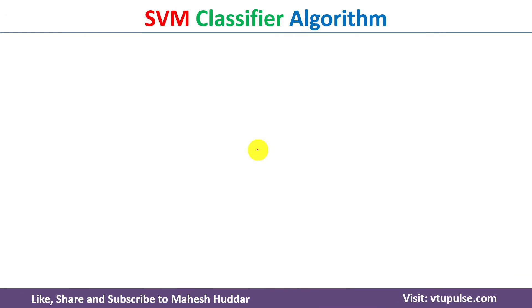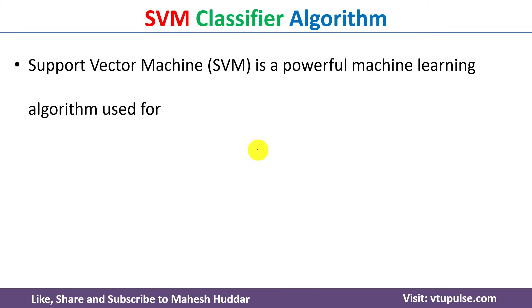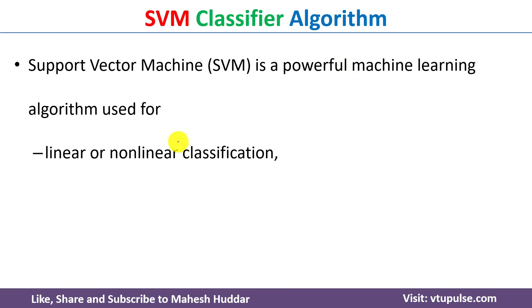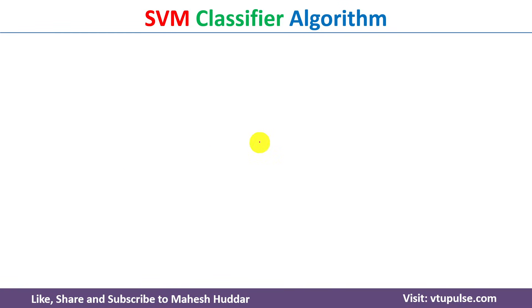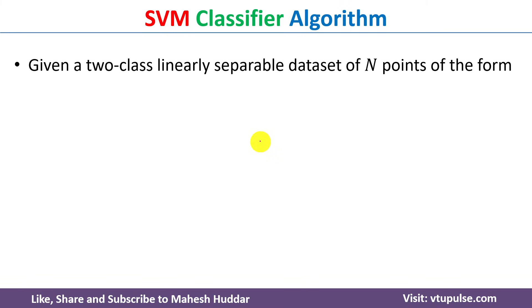Before we go through the SVM algorithm, let's first understand what it is. SVM stands for Support Vector Machine — a powerful supervised machine learning algorithm used to solve many tasks such as linear or non-linear classification problems, regression problems, outlier problems, and many more.